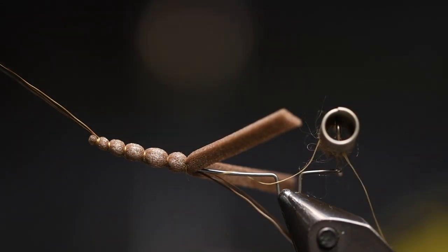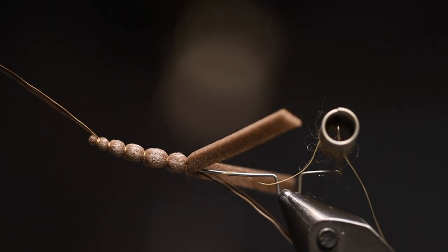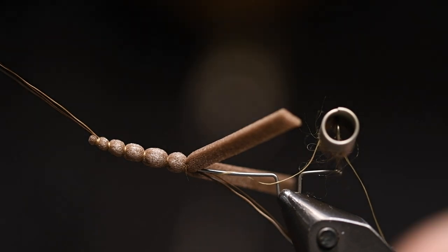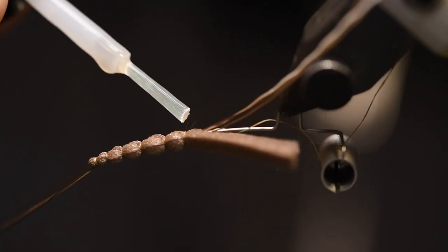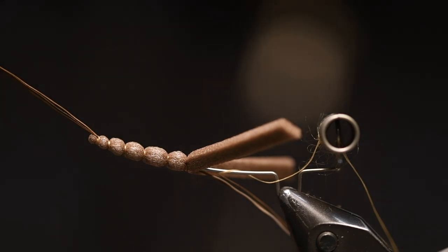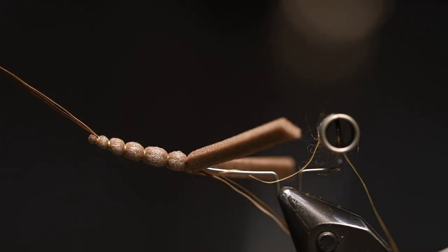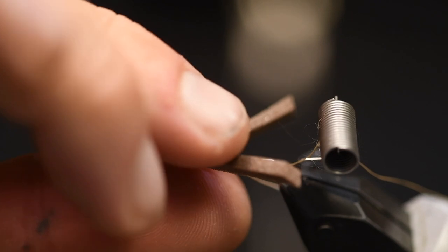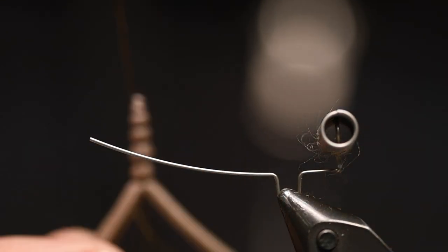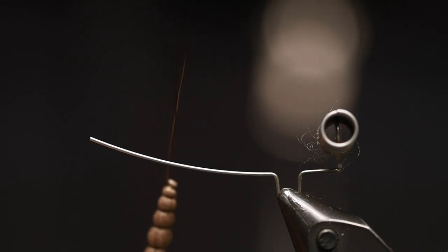And I either use some UV resin or just a little drip of super glue to get it done. Then you pull this off, and then you have a really nice body with those tail fibers.